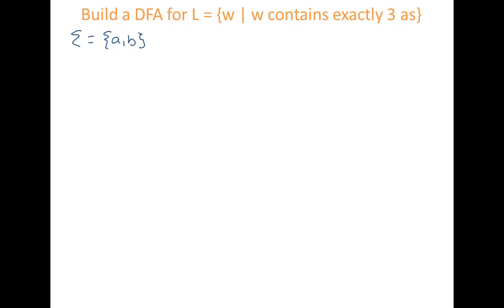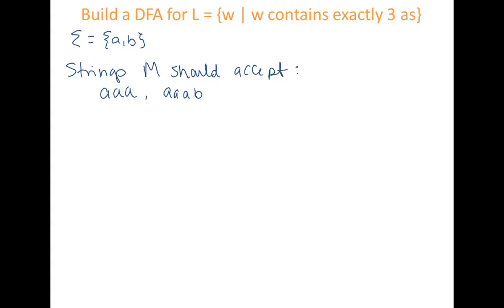So let's come up with some example strings in L — strings that M should accept. Remember, M is our DFA. So M should accept AAA, it should also accept AAAB, it should also accept ABAA, as well as ABBABA, and it would also accept BBABABABABA. So all of these have exactly three A's and any number of B's in any order or arrangement.